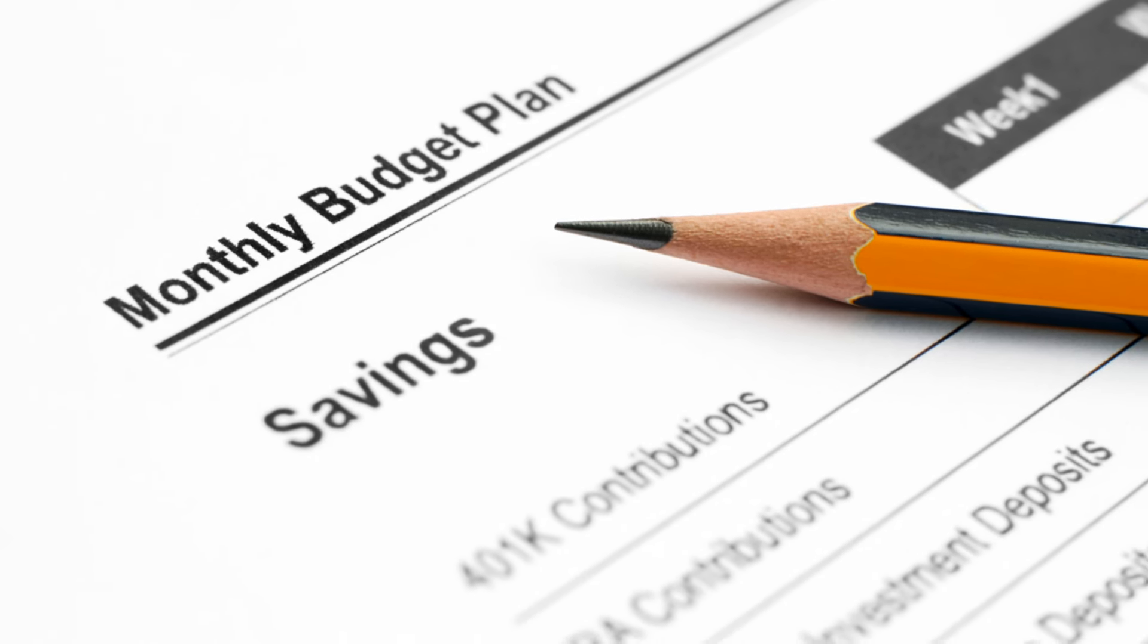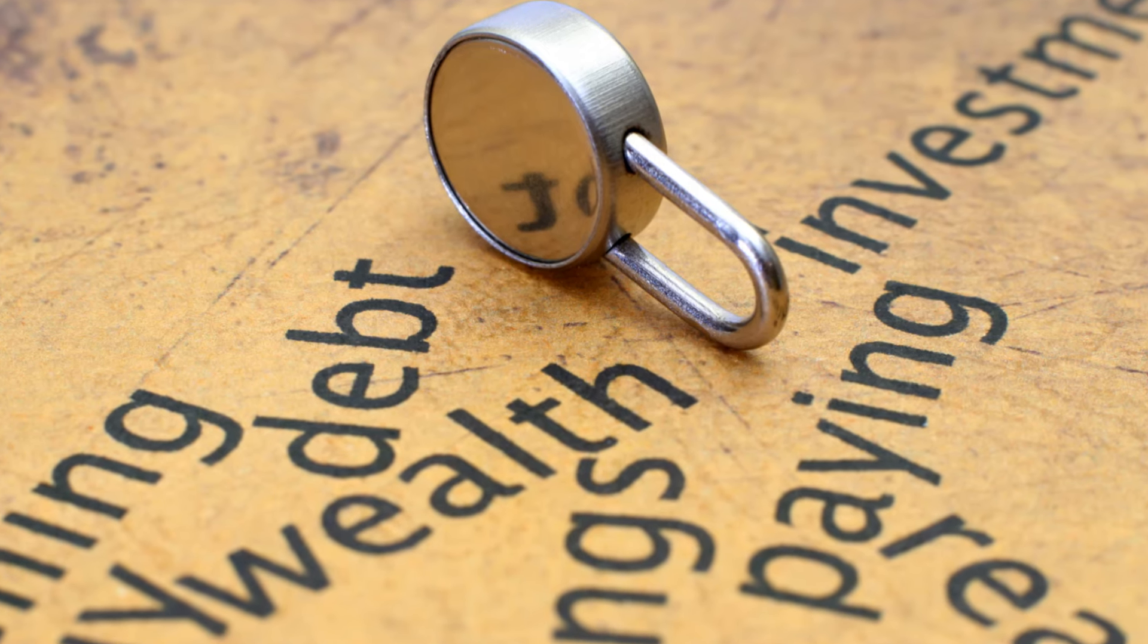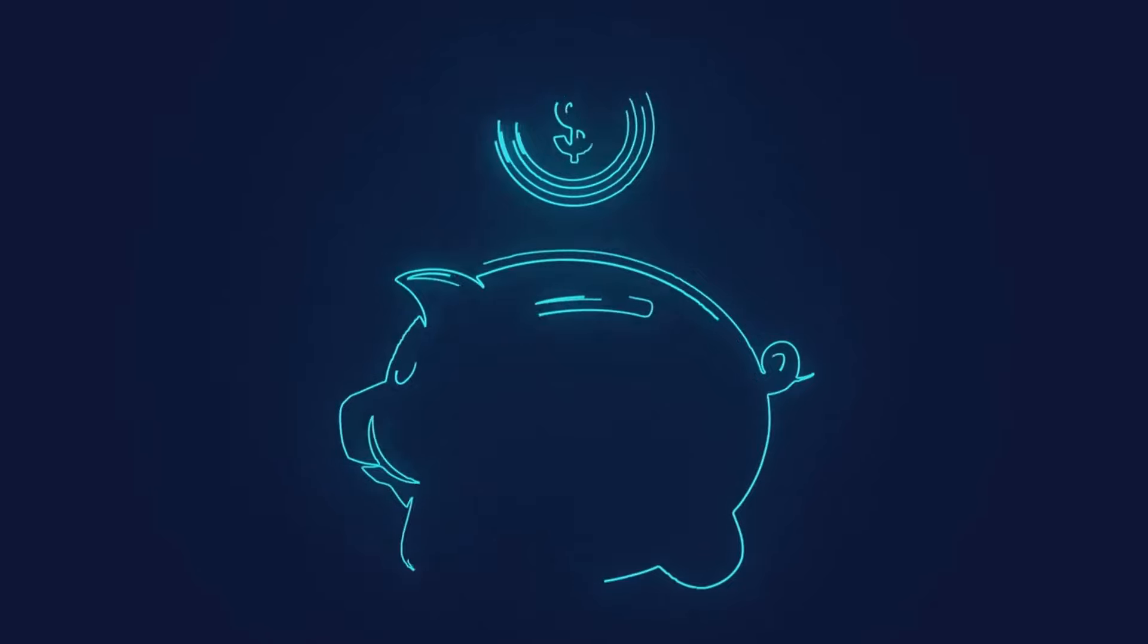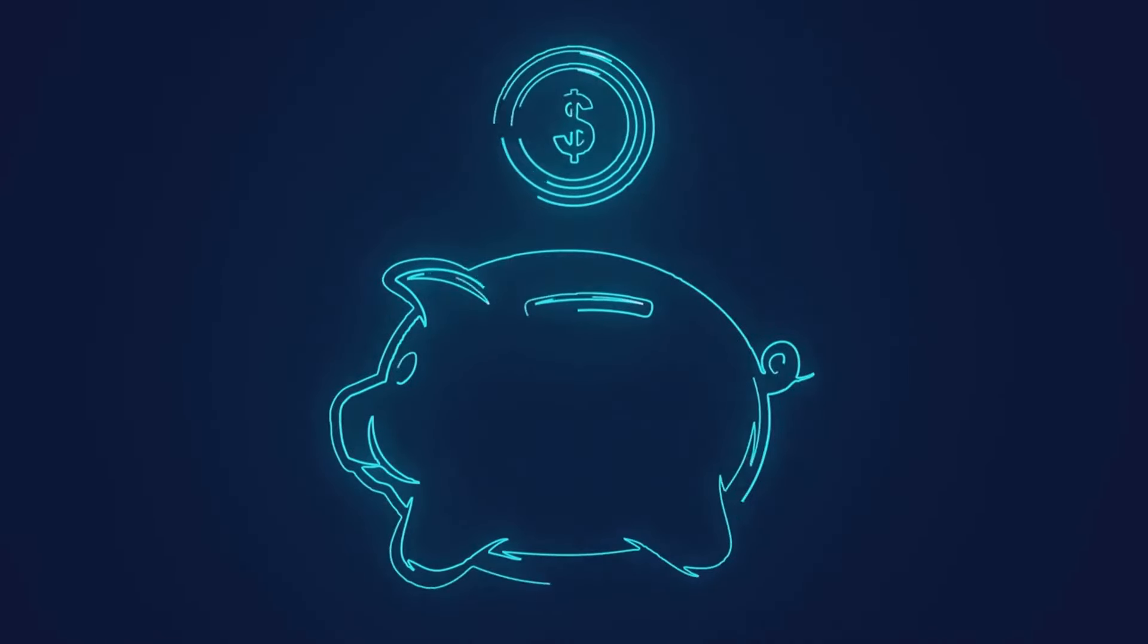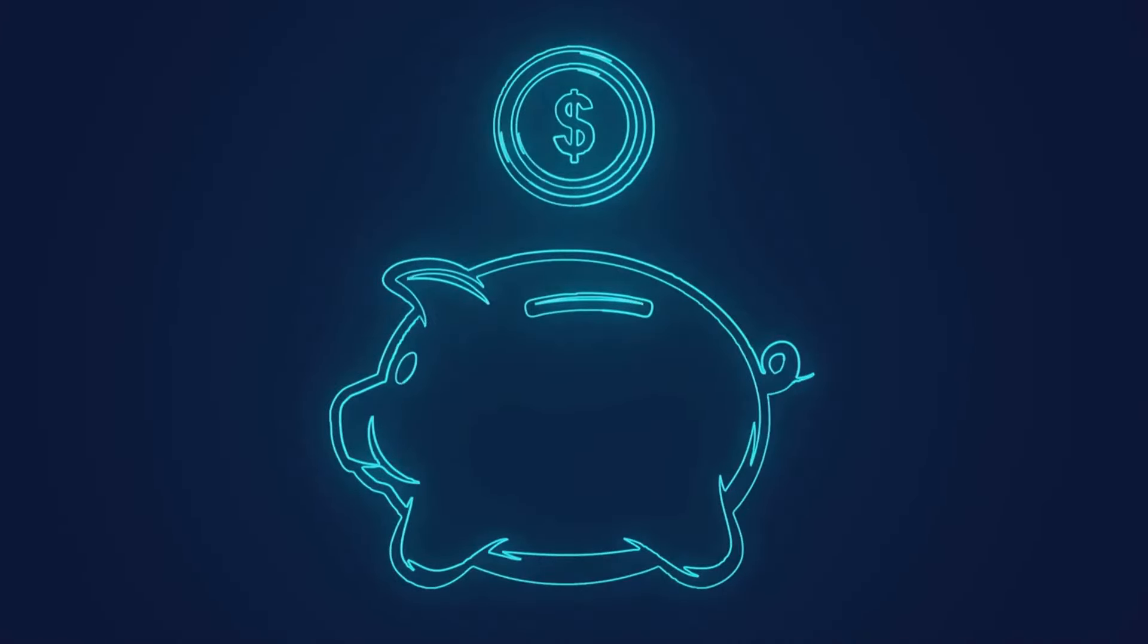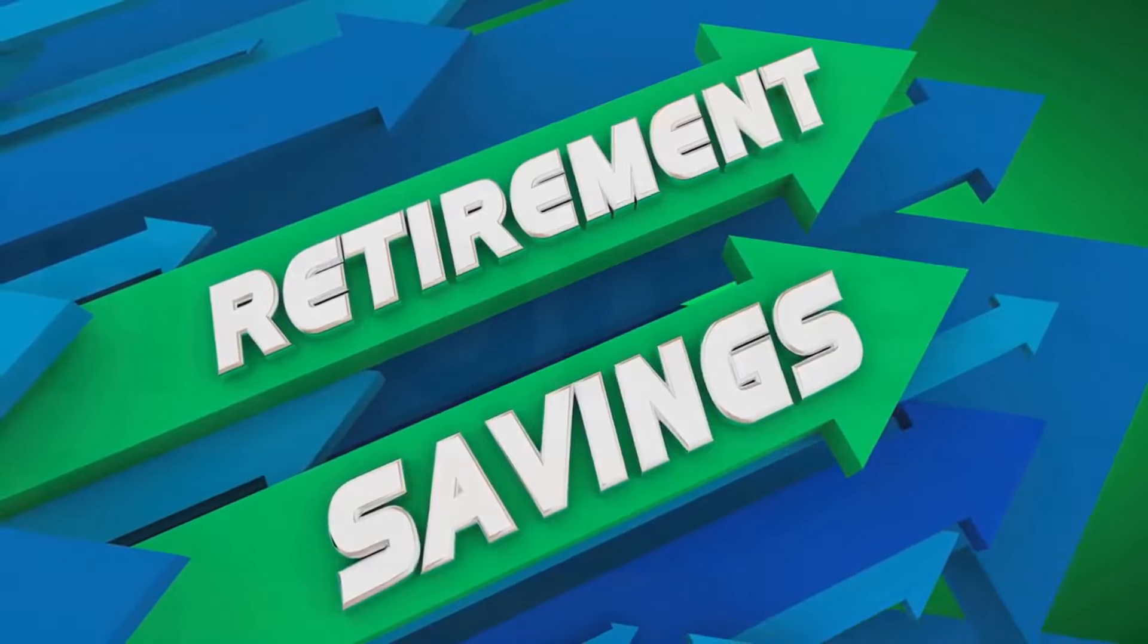So how to start saving for retirement now? Begin by setting aside a small percentage of your income each month. As you earn more, increase that percentage. Seek out retirement savings plans and consider speaking with a financial advisor. The earlier you start saving for retirement, the better.